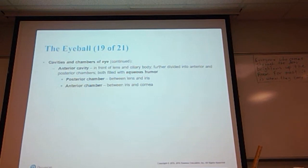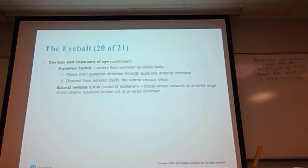The anterior cavity is in front of the lens and the ciliary body. It's further divided into anterior and posterior chambers, both filled with a fluid called the aqueous humor. The posterior chamber is between the lens and the iris. The anterior chamber is between the iris and the cornea. The aqueous humor is a watery substance. It is secreted by the ciliary body. It flows from the posterior chamber through the pupil into the anterior chamber. It is drained from the anterior chamber into the scleral venous sinus. The scleral venous sinus is a blood vessel network at the anterior edge of the iris that drains the aqueous humor out of the anterior chamber.